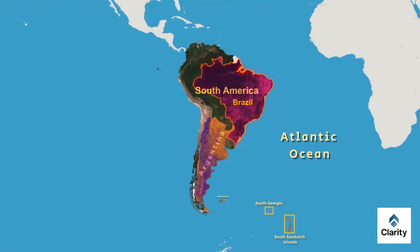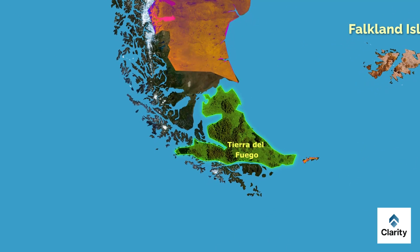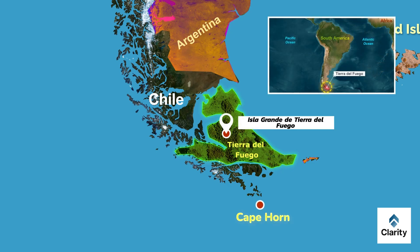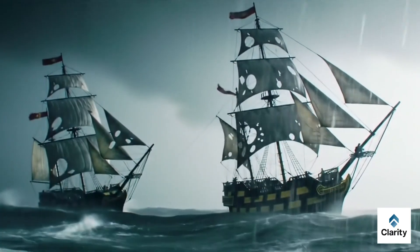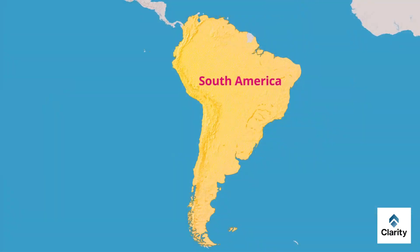At the southern part of South America, there are several important islands. Tierra del Fuego lies at the southern tip of the continent. It is a group of islands shared by Argentina and Chile. The largest island is Isla Grande de Tierra del Fuego. Its southernmost point is Cape Horn, which is famous for stormy seas and dangerous sailing conditions.